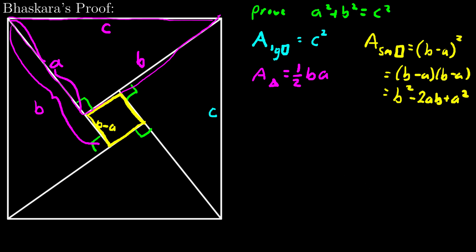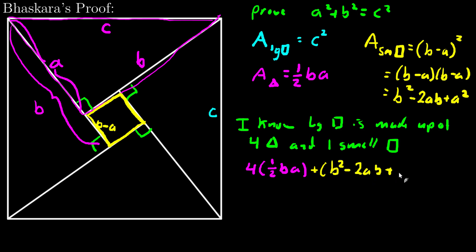Now here's where the magic happens. I know that the large square is made up of four triangles and one small square. And so I can say I know that four of the triangles, so four times one half ba, and one of the small squares, so plus b squared minus 2ab plus a squared,